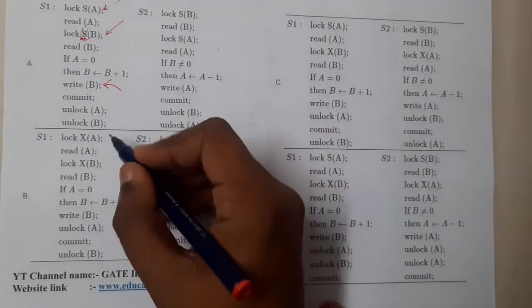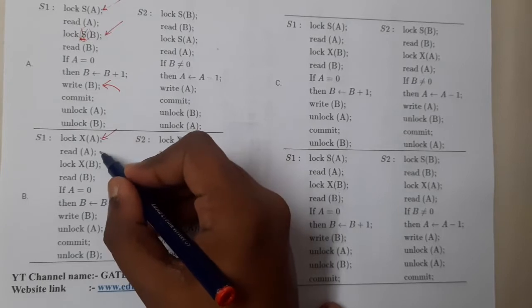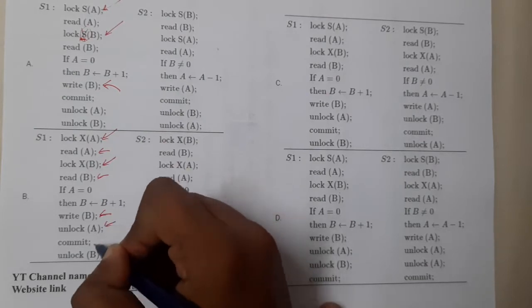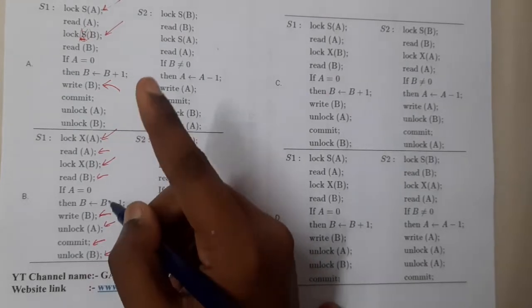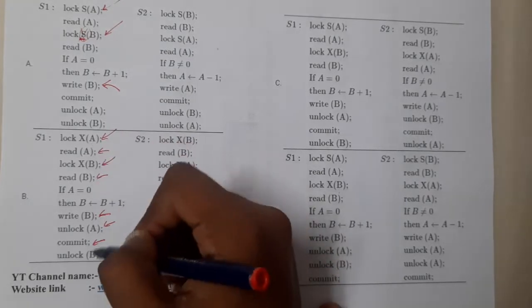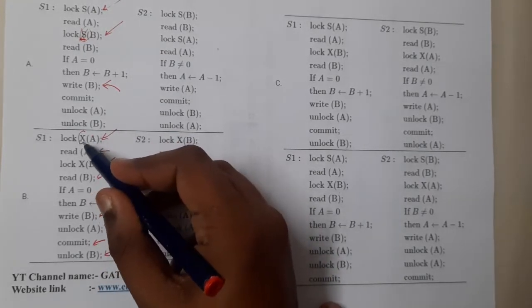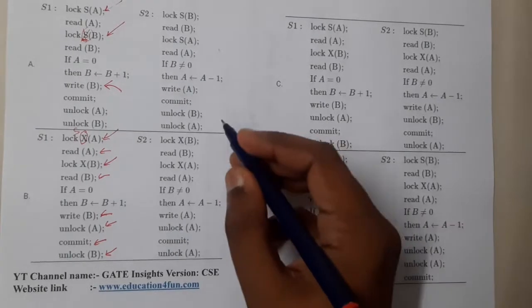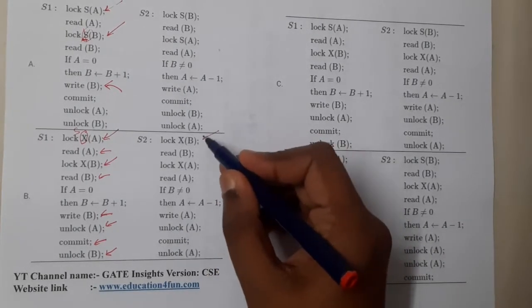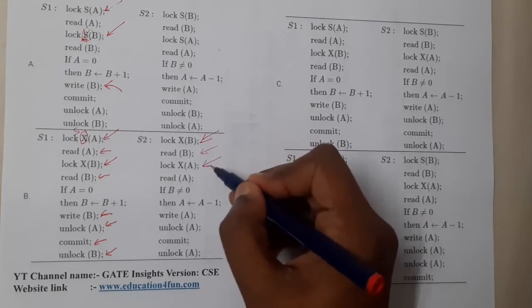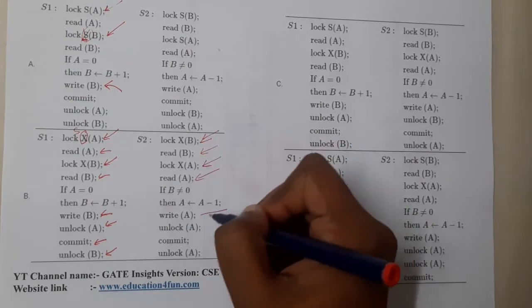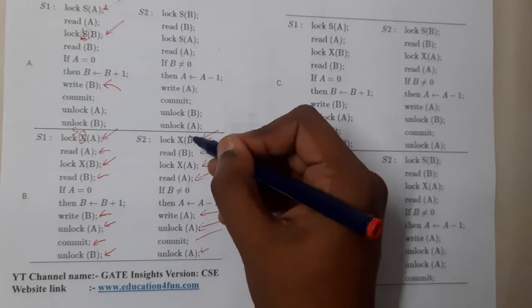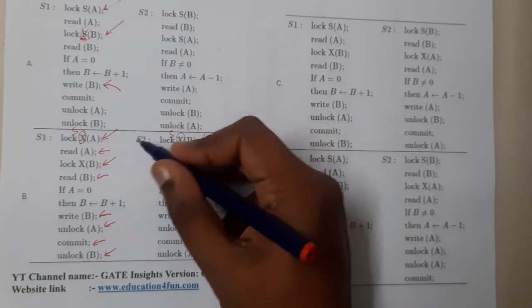Now let us go through option B. Here I used exclusive lock for A, I read it, I used exclusive lock for B, I read it, I updated B, I unlocked A, I committed means indirectly unlocked. The only question I have is: here we are never writing with respect to A, so my only suggestion is instead of exclusive lock, use a shared lock. Now let us move to the second scheduler. Here we used exclusive lock for B, we read B, exclusive lock for A, we read A, then we wrote A, then we unlocked A, we committed. There is no issue in both of these, the only thing is instead of using exclusive locks here in both places he could use shared locks.